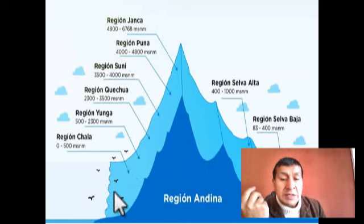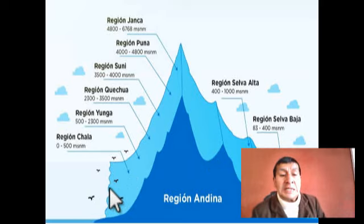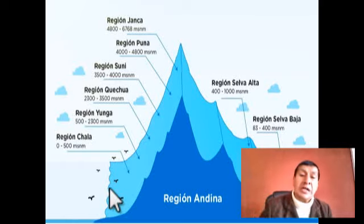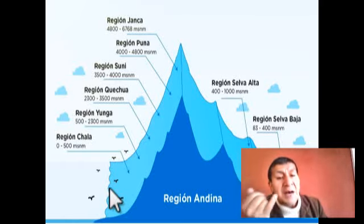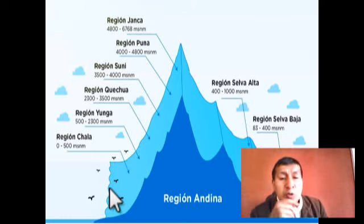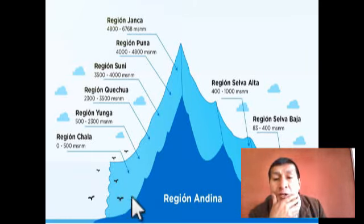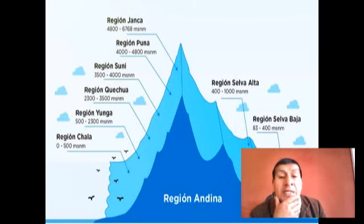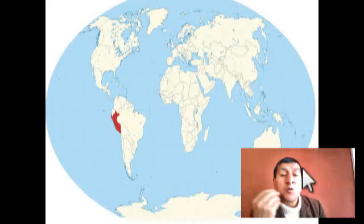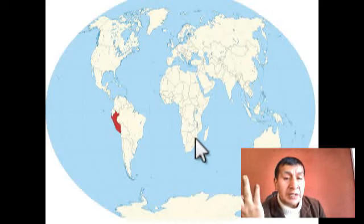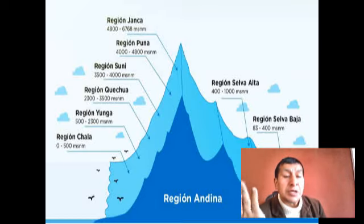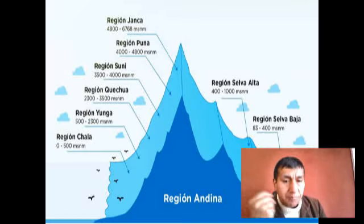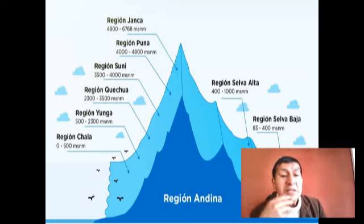En nuestra costa está al lado un mar peruano que es uno de los mares más diversos que hay en el planeta, con gran riqueza. En la región Yunga y la región Quechua: el maíz, la papa y otros productos. Nuestra situación de estar ubicados en diversas regiones naturales, de acuerdo a la tesis de Pulgar Vidal, hace que el Perú sea un país que sobresale en riquezas dentro de su territorio. Riquezas que pueden ser explotadas, extraídas, procesadas, transformadas y vendidas.